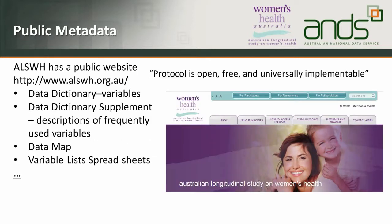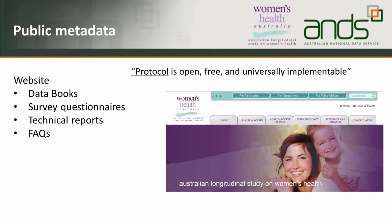Regarding public metadata — with the protocol being open — we have a website that lists the access procedure and also has a lot of metadata, including a data dictionary listing all variables and data sets, a data dictionary supplement describing frequently used variables in detail, and a data map showing how variables are used across different surveys and cohorts. We have up to eight surveys for some cohorts. We also provide spreadsheets of all variables, data books with frequency summaries, questionnaires, technical reports, and a frequently asked questions page.